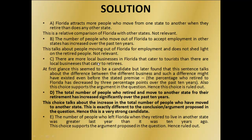Option C says there are more local businesses in Florida that cater to tourists than there are local businesses that cater to retirees. At first glance this seems to be a candidate, but this sentence talks about the difference between different businesses, and such a difference might have existed even before the stated premise. So this option is again ruled out.